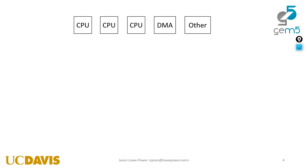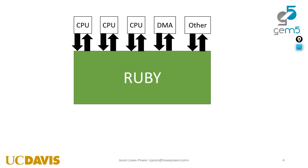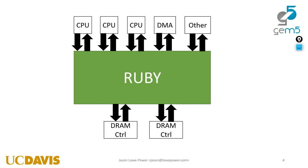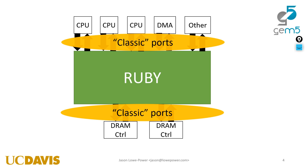A little overview of Ruby: you have CPUs, DMA controllers, GPUs, and other things that talk to this big black box which is Ruby. On the other side you have memory controllers — your DRAM. Ruby is just this big black box that you dump requests into, and they flow out on the other side to memory if they don't hit in the cache. Essentially it's one big MemObject that has all these vector ports on it, and the interfaces into and out of Ruby are classic ports.